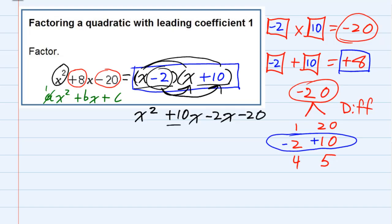And these middle terms simplify, so that we have x squared plus 8x, combining like terms, minus 20. So our factoring did work. Just to write it one more time here, we factored it as x minus 2 and x plus 10.